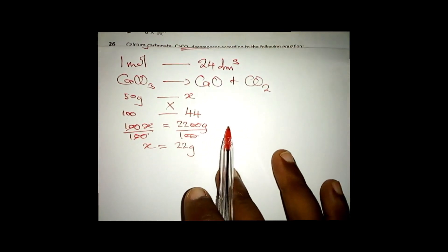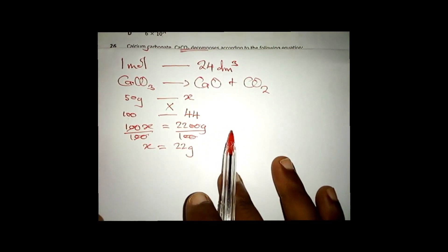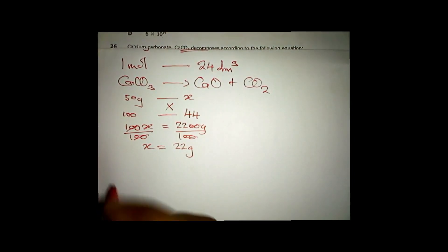So 50 grams of calcium carbonate when it decomposes gives us 22 grams of carbon dioxide. Now we want the volume of this CO₂.